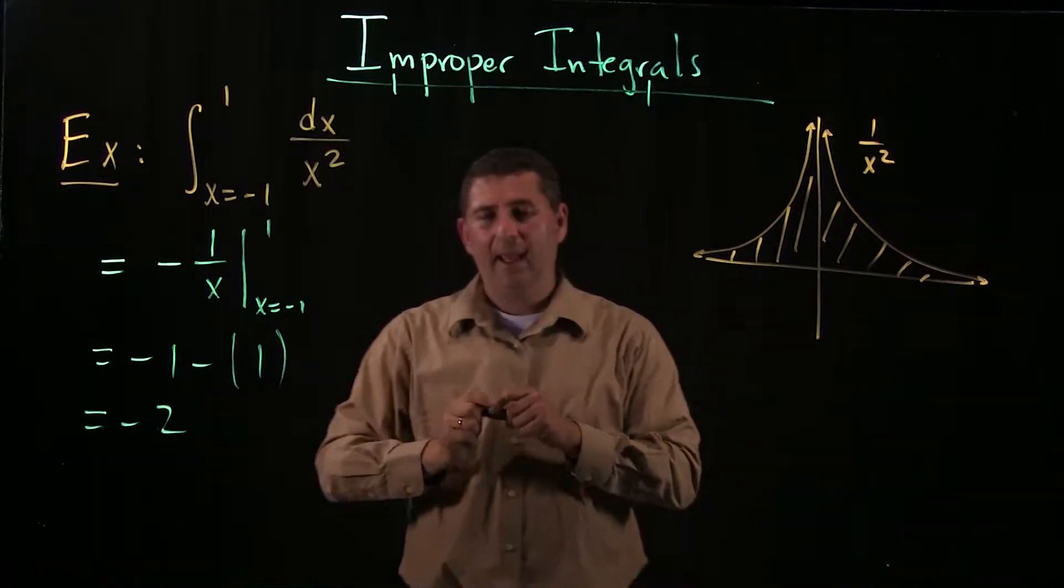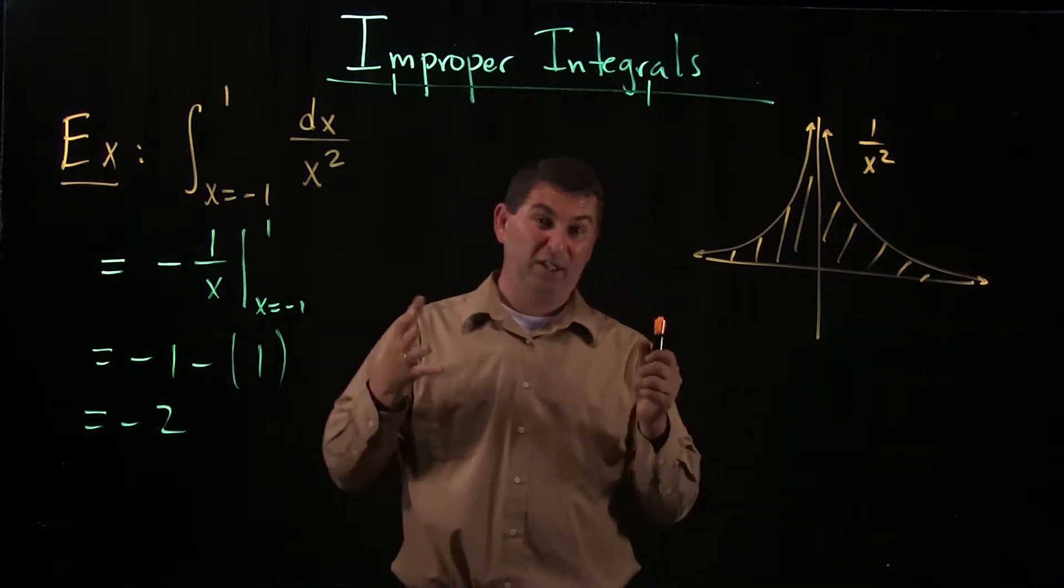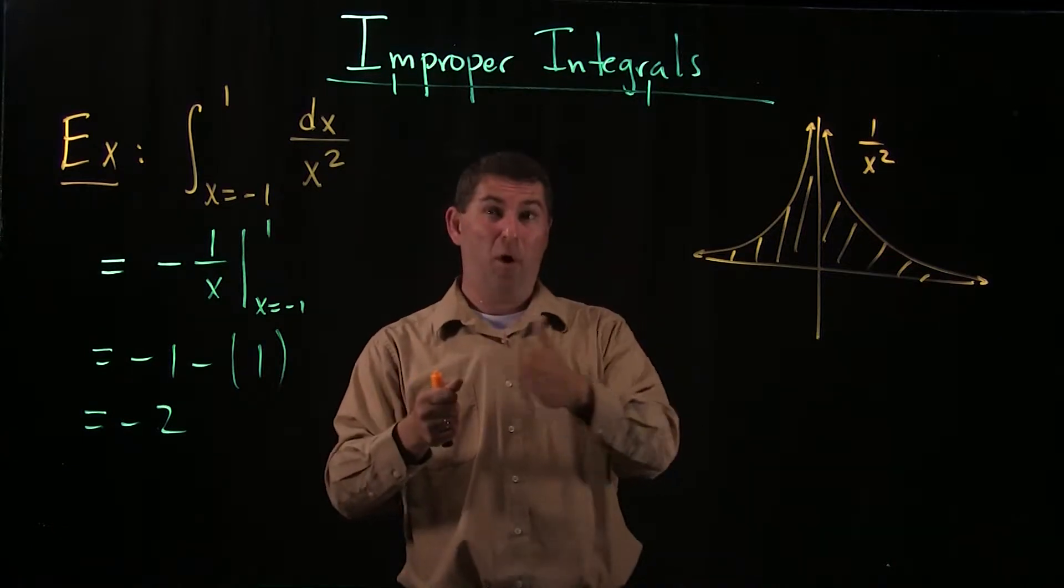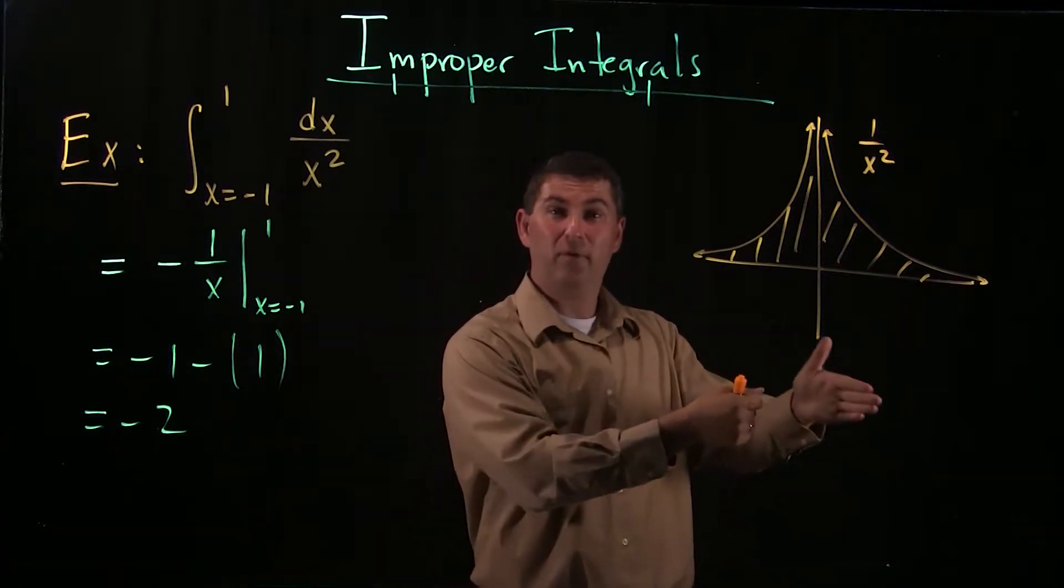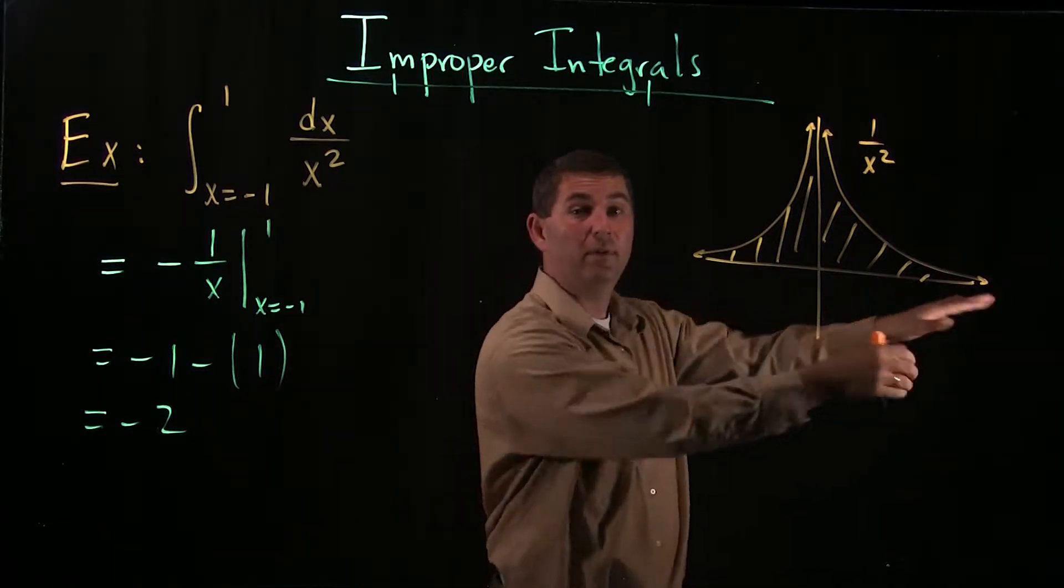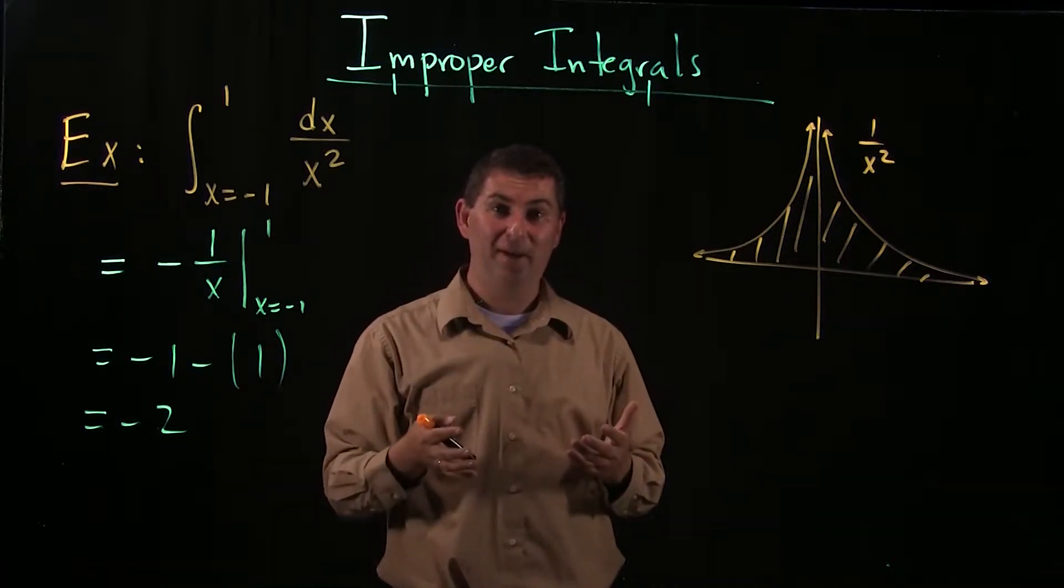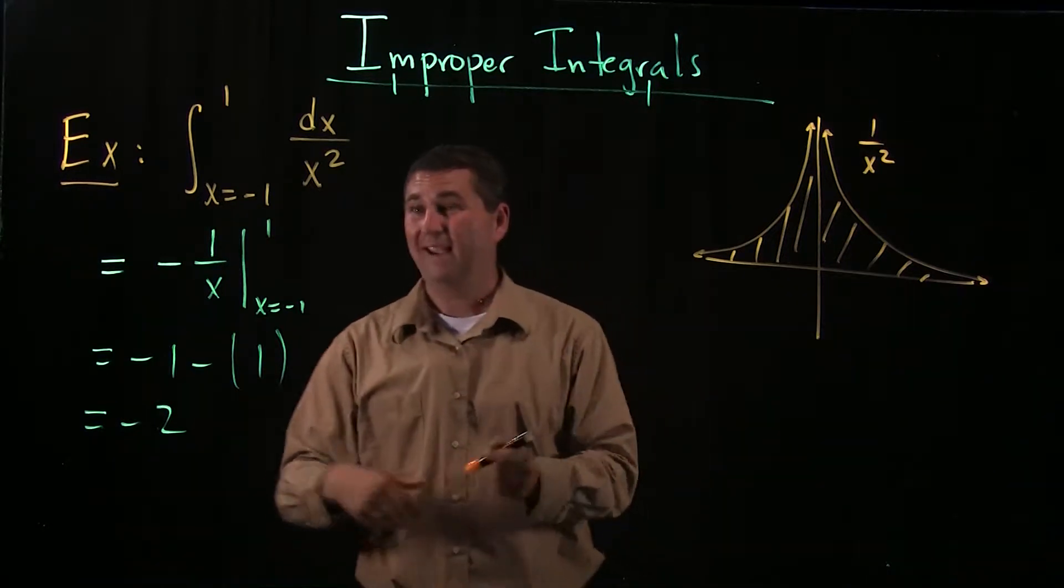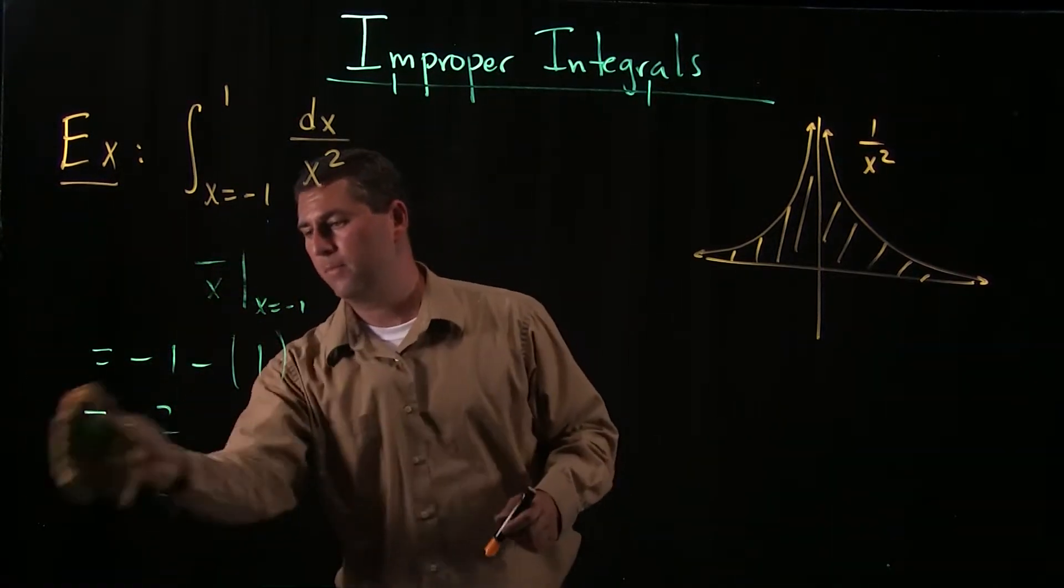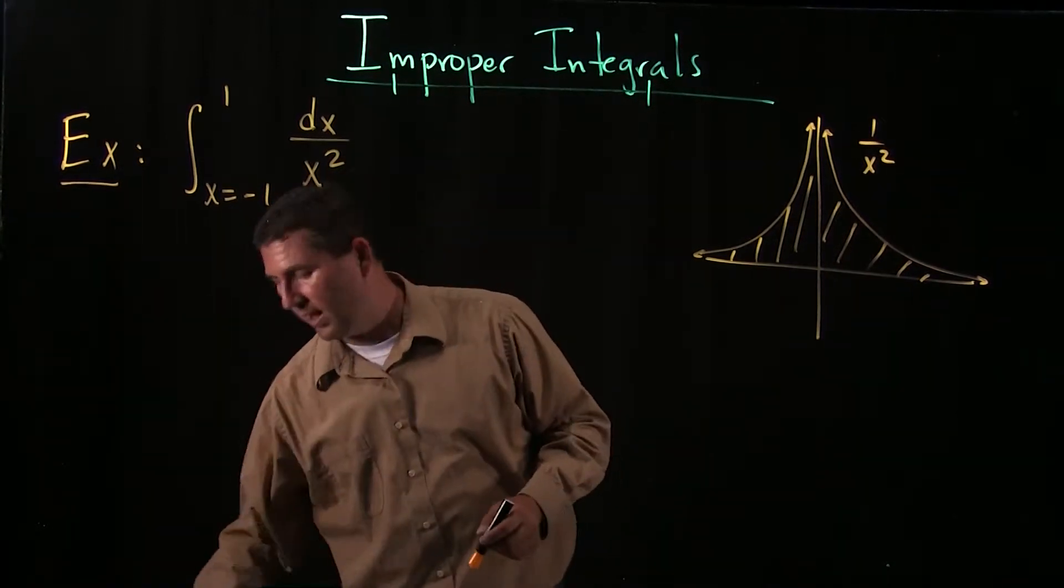How are we going to handle this? Well, it seemed like when we had infinite limits, we should actually use limits to handle the problem. If you can't go all the way to infinity, go part of the way and then keep pushing out further. So we're going to try the same thing here, only now we're not going off to infinity, we're getting closer and closer to a point of discontinuity.